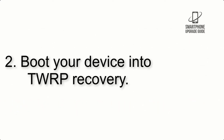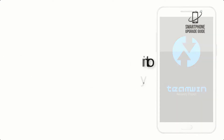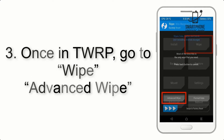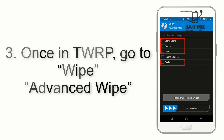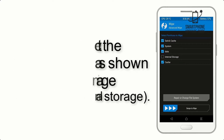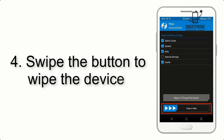Step 2: Boot your device into TWRP recovery. Once in TWRP, click on Advanced Wipe and select the checkboxes as shown in the image, excluding internal storage.